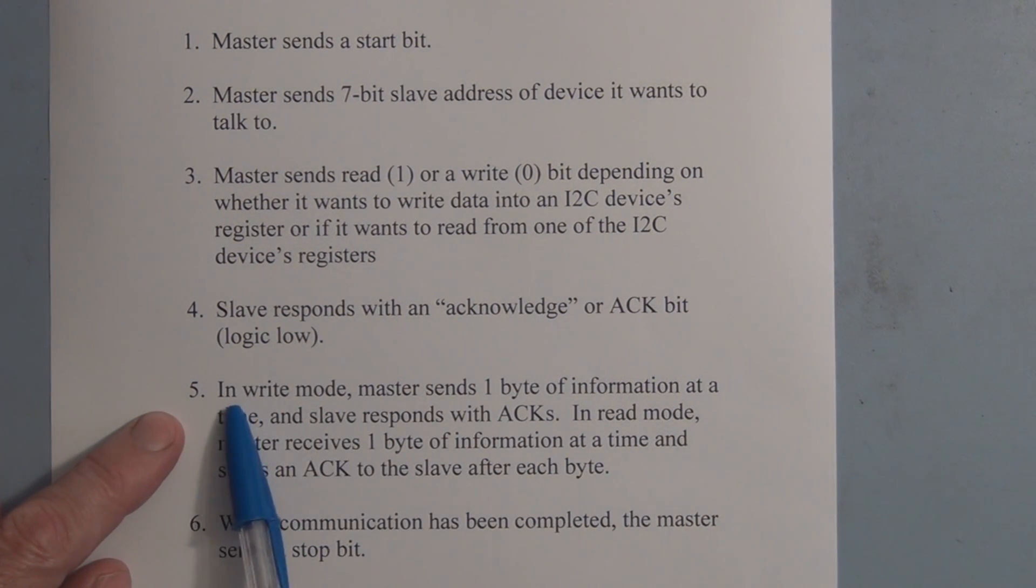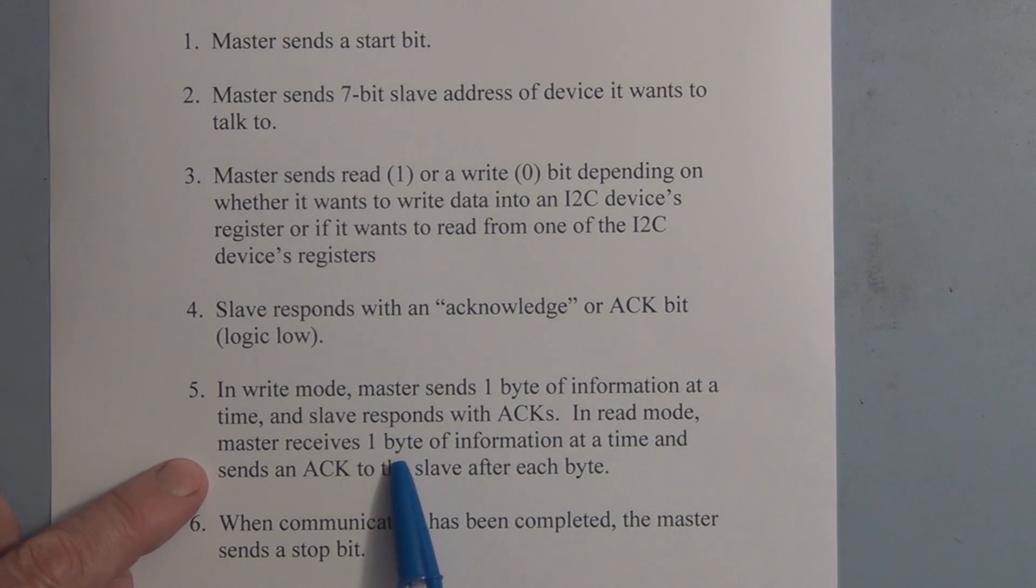If we're writing to the slave, the master sends one byte of information at a time and the slave responds with an ACK or acknowledge after each byte of information. And then in the read mode, if the master is receiving a byte of information from the slave, it will send an acknowledge to the slave saying it has received that information.